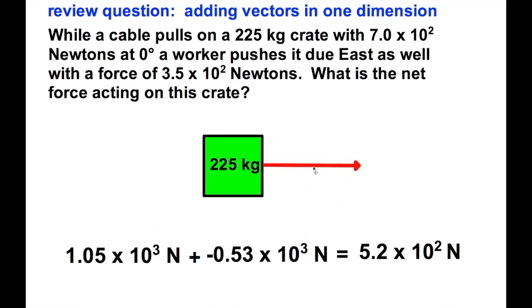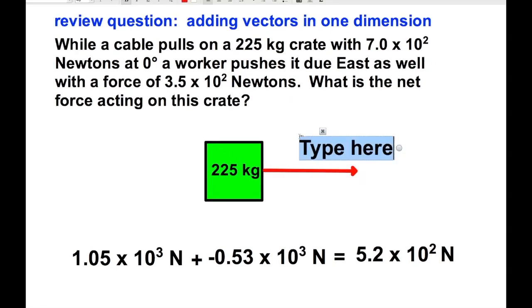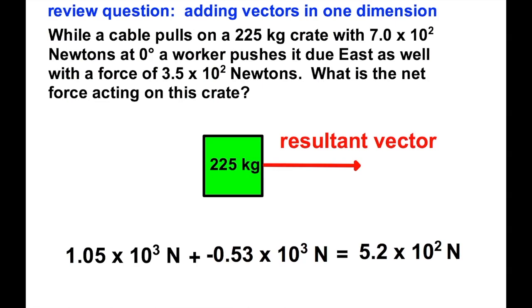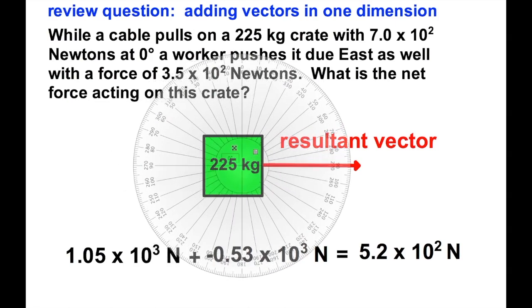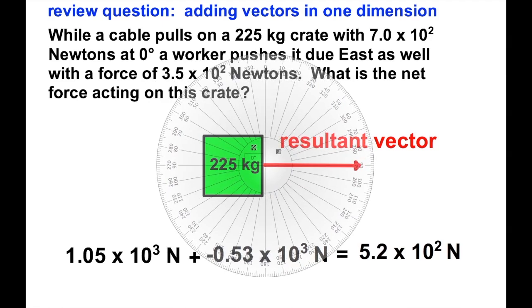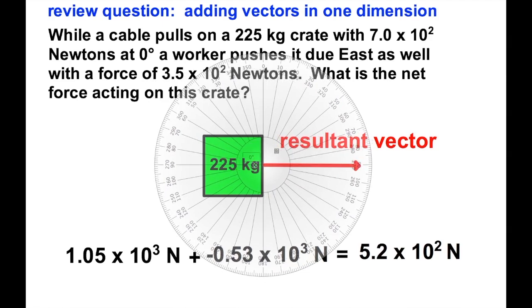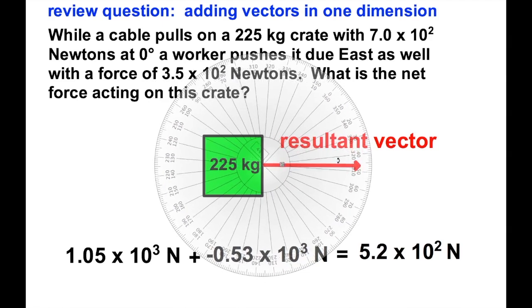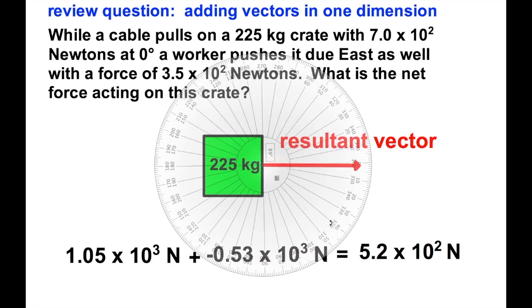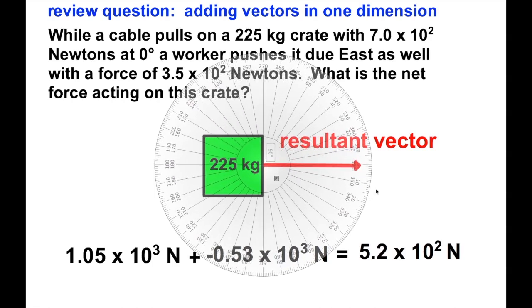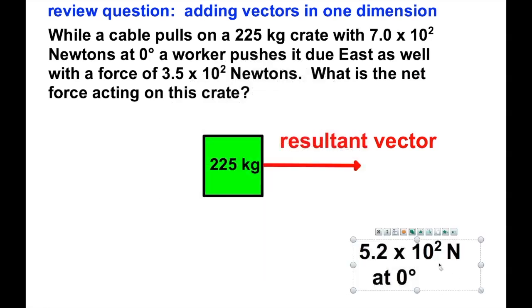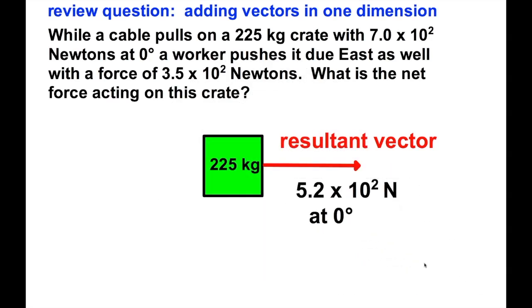I take my single resultant vector, and we see that it's 5.2 times 10 to the 2 Newtons. That hasn't changed. And there it is, my resultant vector, which would be 520 Newtons. But I did it in scientific notation to show the significant digits. And when we check my direction, there's my 360 degree compass. I of course turn it so east is zero, and it would be in the direction of zero degrees.